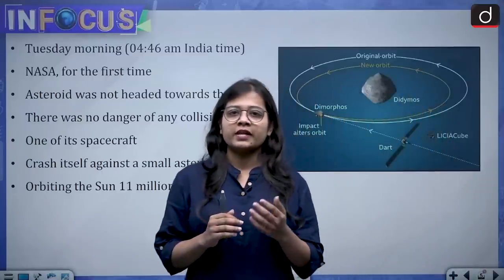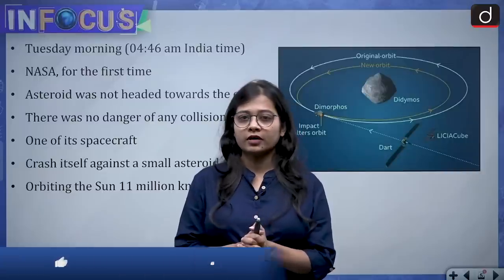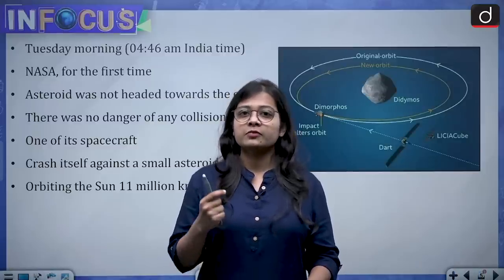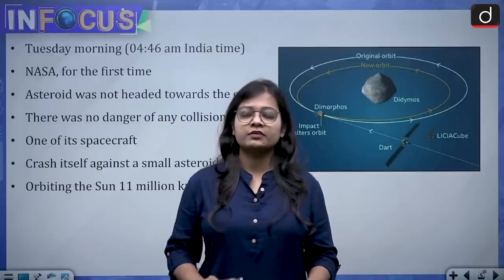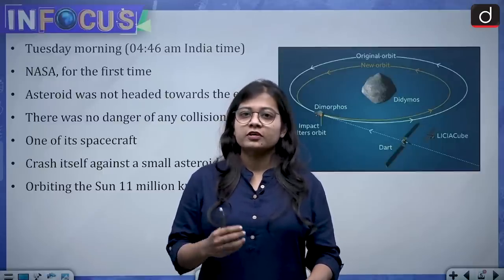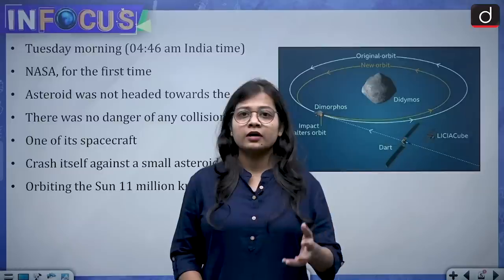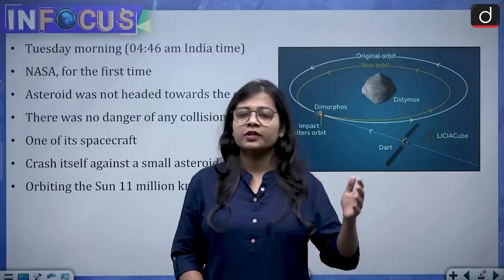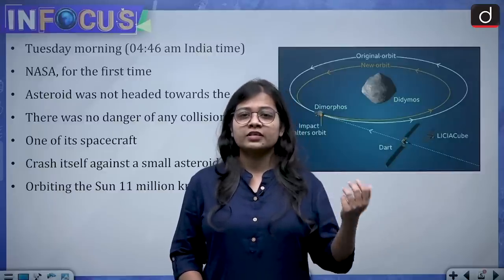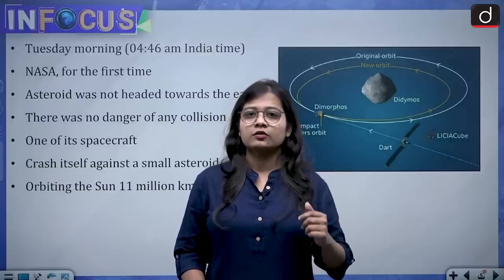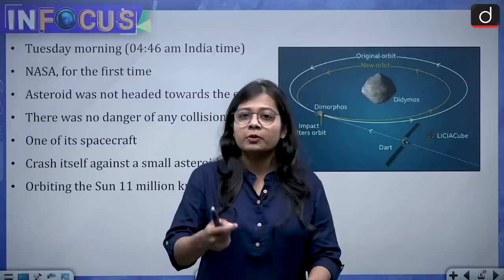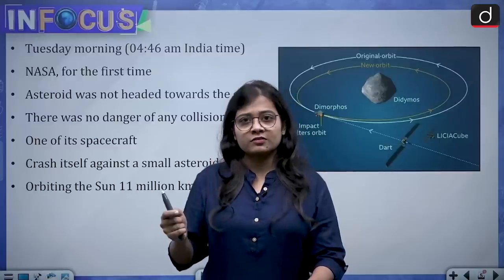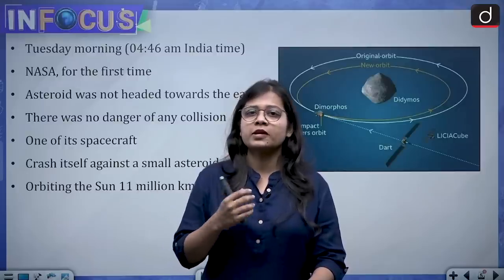Many times we have seen asteroids coming towards Earth, and predictions that there might be danger from asteroids. This time NASA has developed a planetary defense technique: if in future an asteroid comes to hit the Earth and cause damage, NASA will be able to protect Earth by destroying the asteroid or making it deviate from its orbit. NASA has now tested whether, if this condition arises in future, what humans will be able to do.